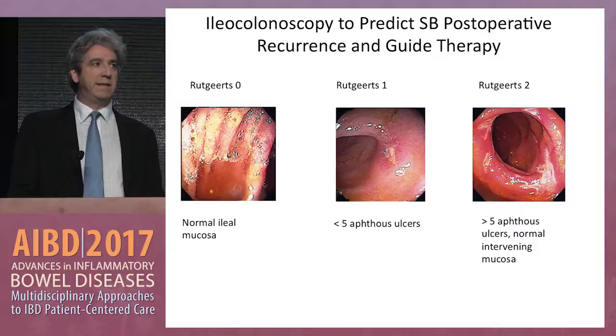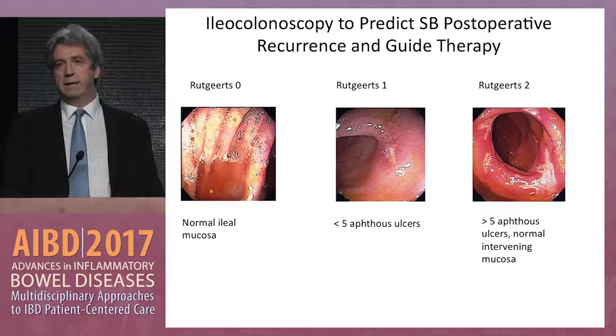Patients in more of a gray zone for early disease recurrence will be evaluated for the first time at six months, and that will help guide us in terms of who should start medical therapy. Here on the left you see a pristine normal mucosa — this is within the first 10 centimeters proximal to the ileocolic anastomosis.